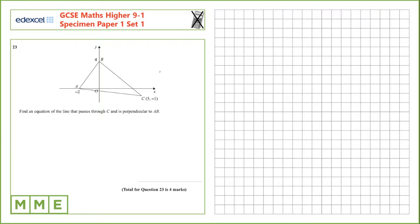Question 23. Find an equation of the line that passes through C and is perpendicular to AB. If we need to know a line that's perpendicular to AB, first we need to know the gradient from A to B.